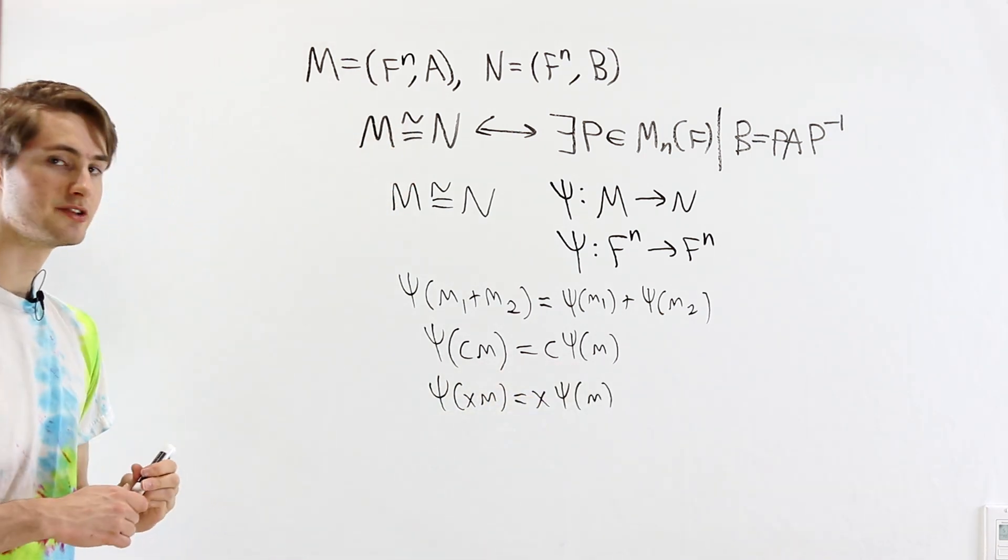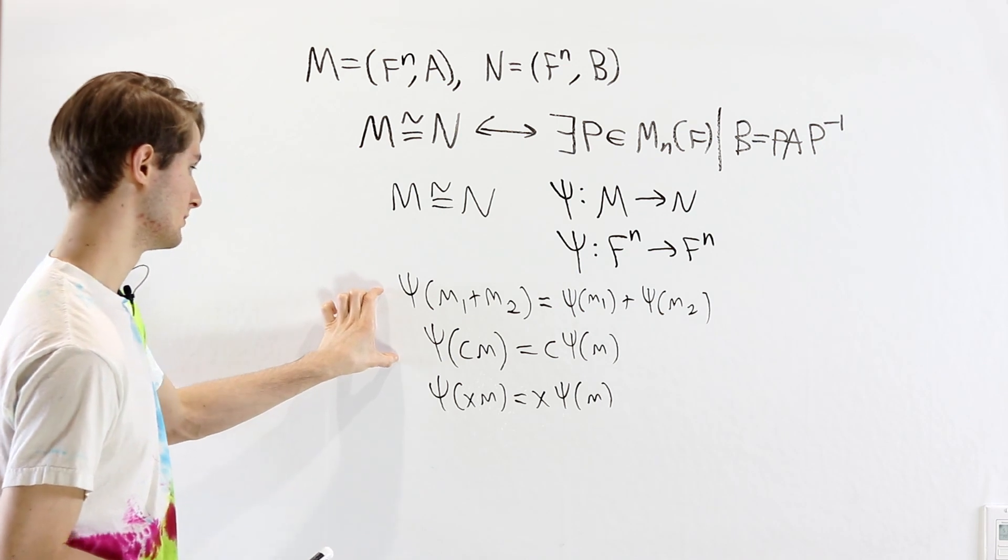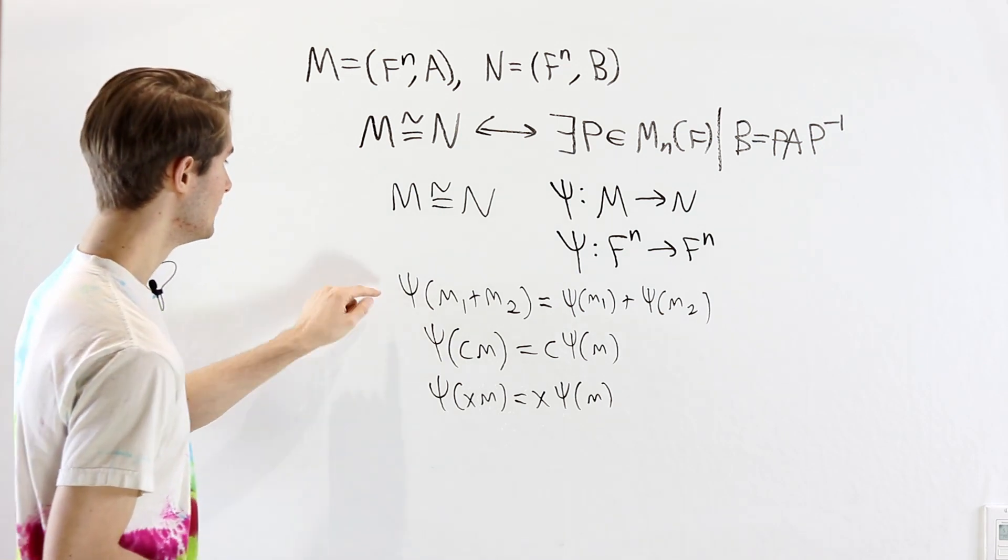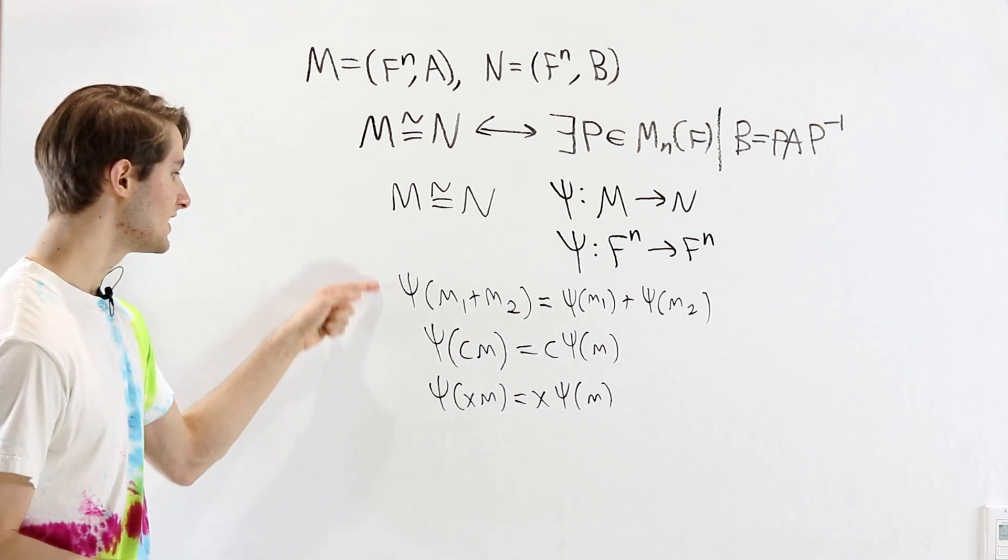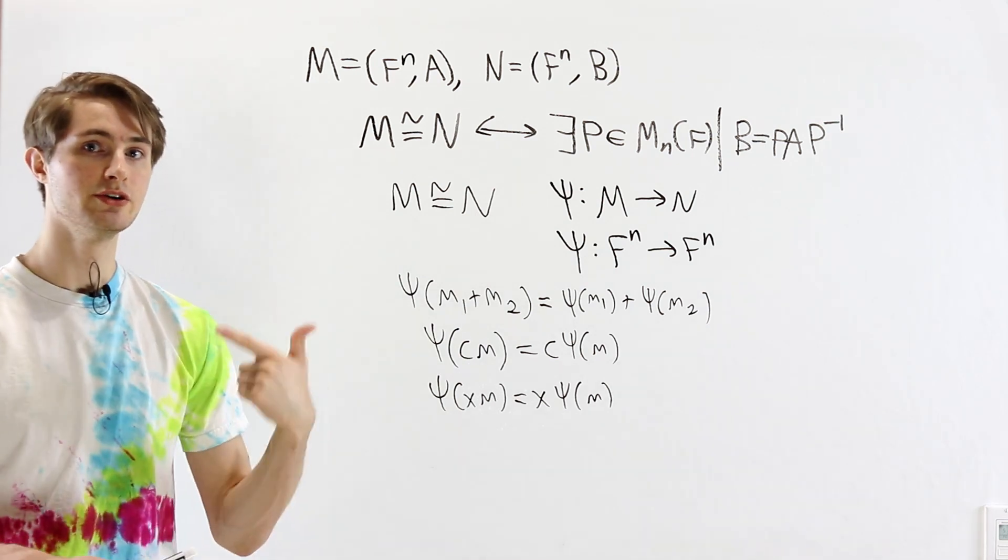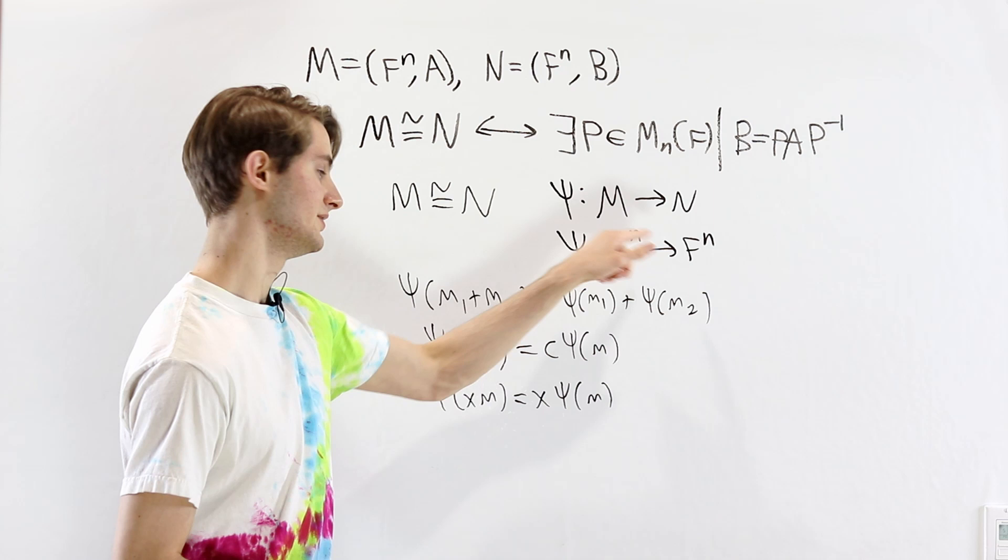So first, let's take a look at these two conditions right here. These two, since c is an element in a field, these are the conditions for ψ to be a linear transformation from F^n to F^n.